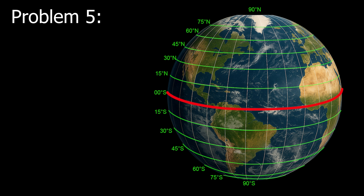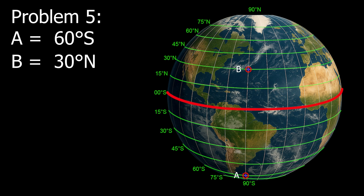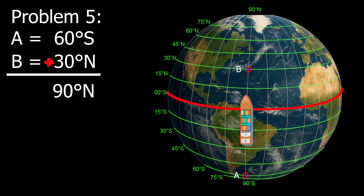Example number 5: Point A, 60 degrees south. Point B, 60 degrees south. Since the points are in different hemispheres, we add them together: 60 plus 30 equals 90. The vessel is moving north. Therefore, the D-lat is 90 degrees north.